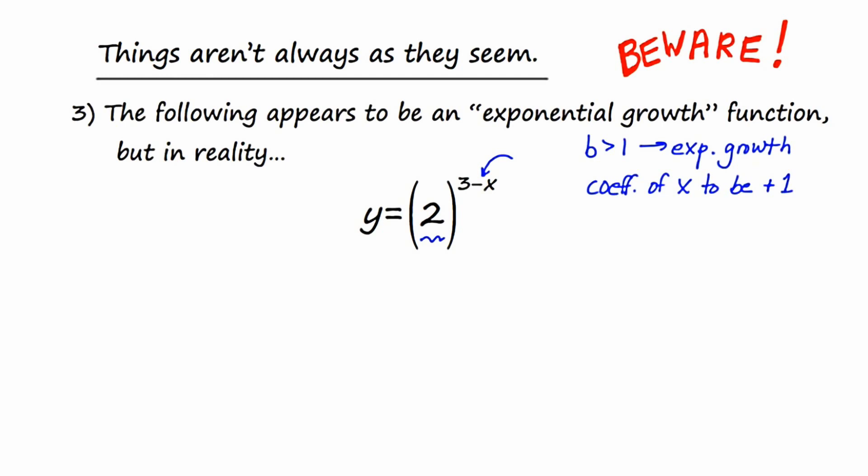The first manipulation that I'm going to do is I'm going to swap the position of the 3 and the negative x in the exponent. The next thing that I'm going to do is I'm going to factor out a negative 1 from the exponent. Notice that as I factored out that negative 1, the plus 3 turned into a minus 3. If you're not sure of that, you could always redistribute the negative in your head just to check.